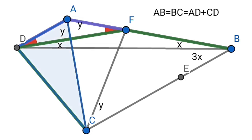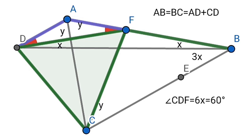Now look at triangle ADC and triangle AFC — both are identical or symmetrical. Therefore the line CF is equal to CD. So triangle CDF is an equilateral triangle. Therefore angle FDC, which is equal to 6x, is equal to 60 degrees. So x is equal to 10 degrees. Have a nice day.